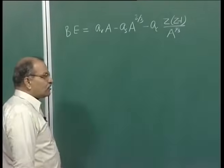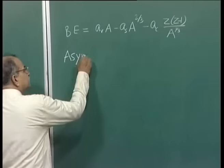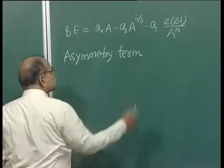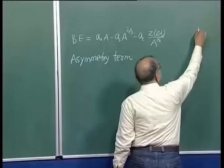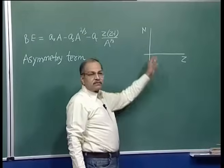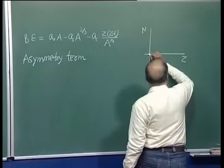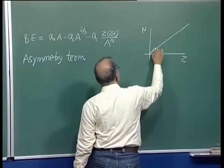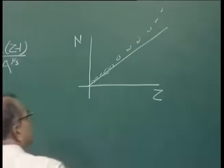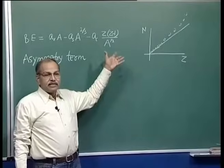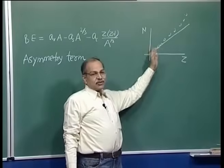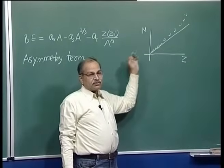Recall the N versus Z diagram. For stable nuclei, lighter nuclei lie almost on the line N = Z, and after that there is some deviation. In heavier nuclei you have more neutrons than protons. For lighter nuclei you have almost equal numbers of protons and neutrons. This is because nuclear force by itself prefers Z equal to N.